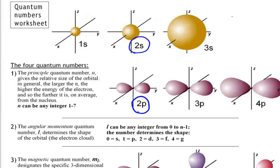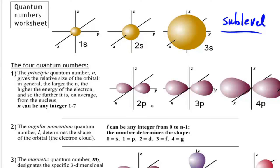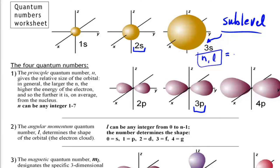An important term to understand is sublevel. Sublevel refers to the specific orbital an electron occupies — for example, 2s, 3s, or 3p. The sublevel refers to both the principal quantum number and the angular momentum l value together. Therefore, the sublevel represents the energy of the electron in any element other than hydrogen.